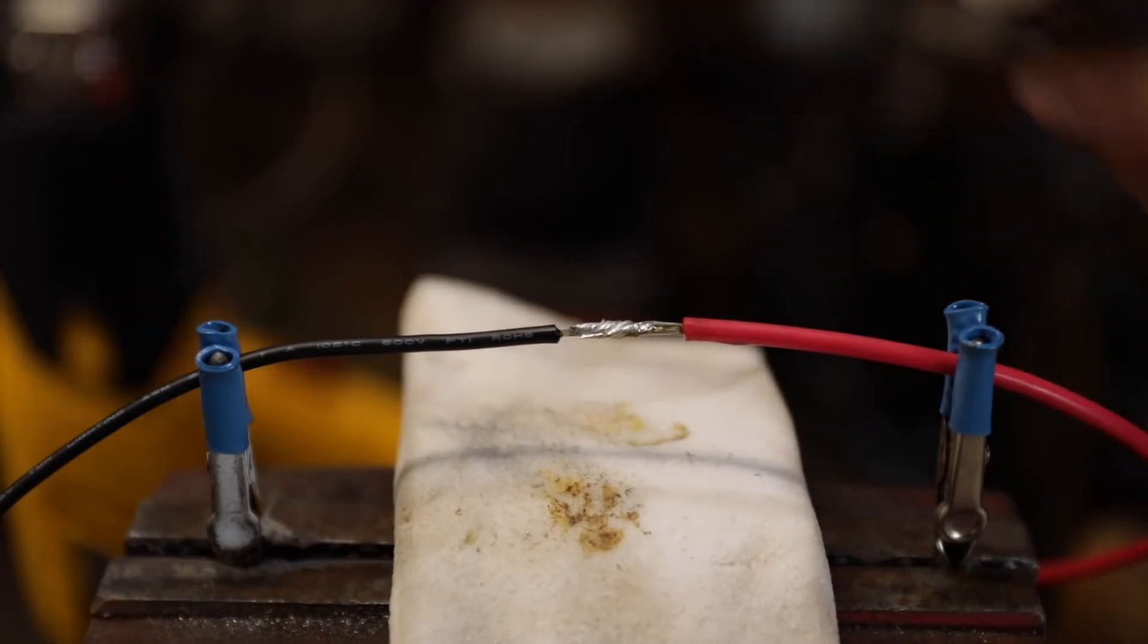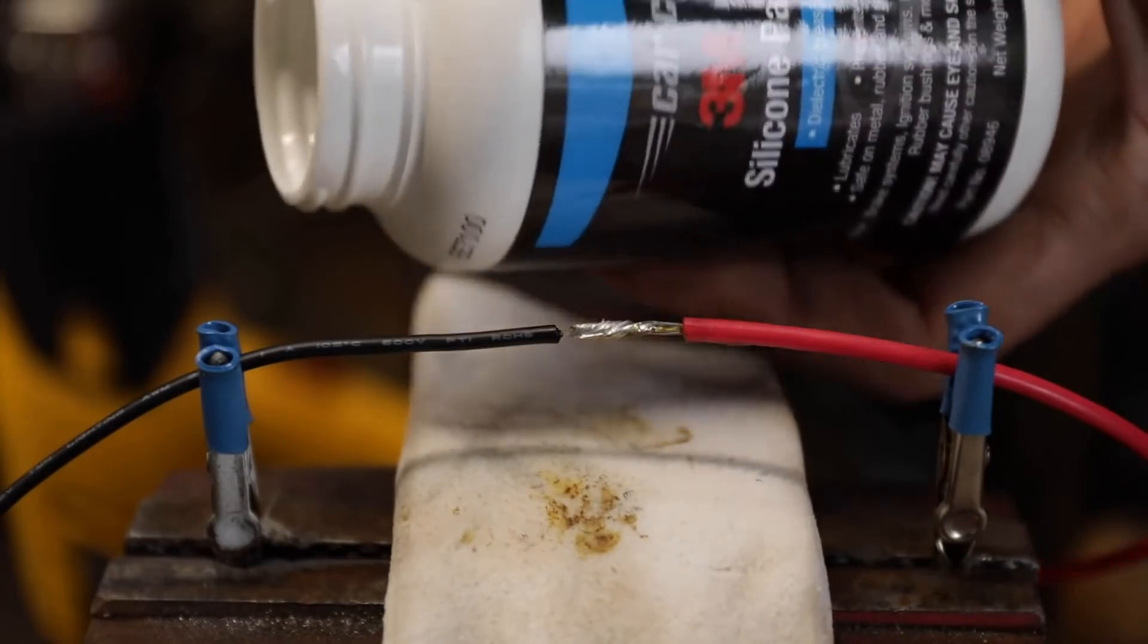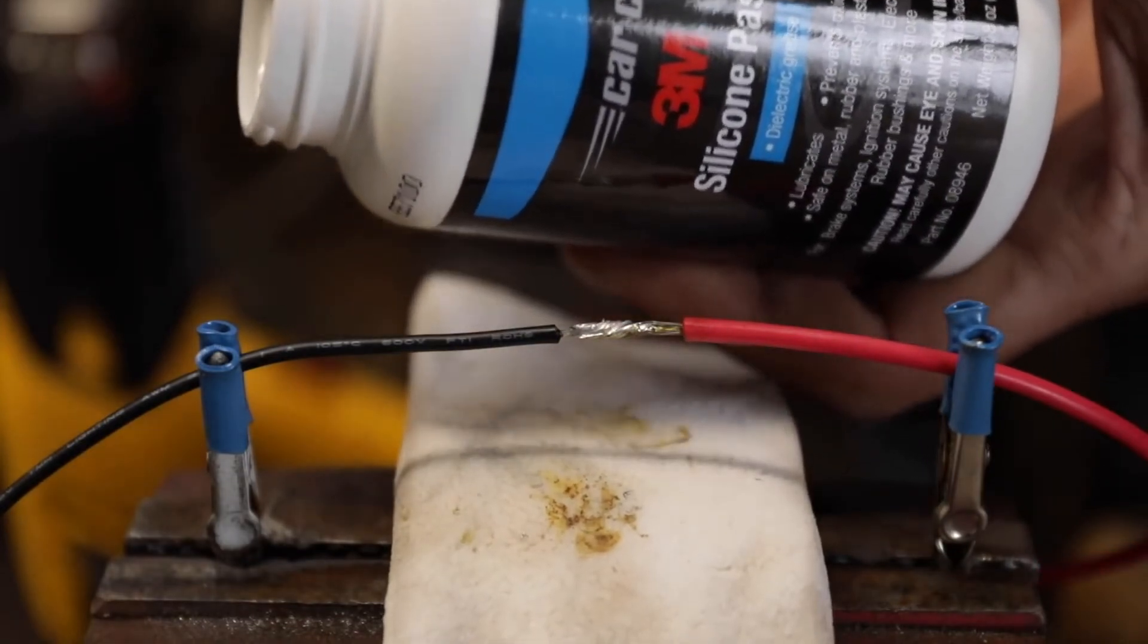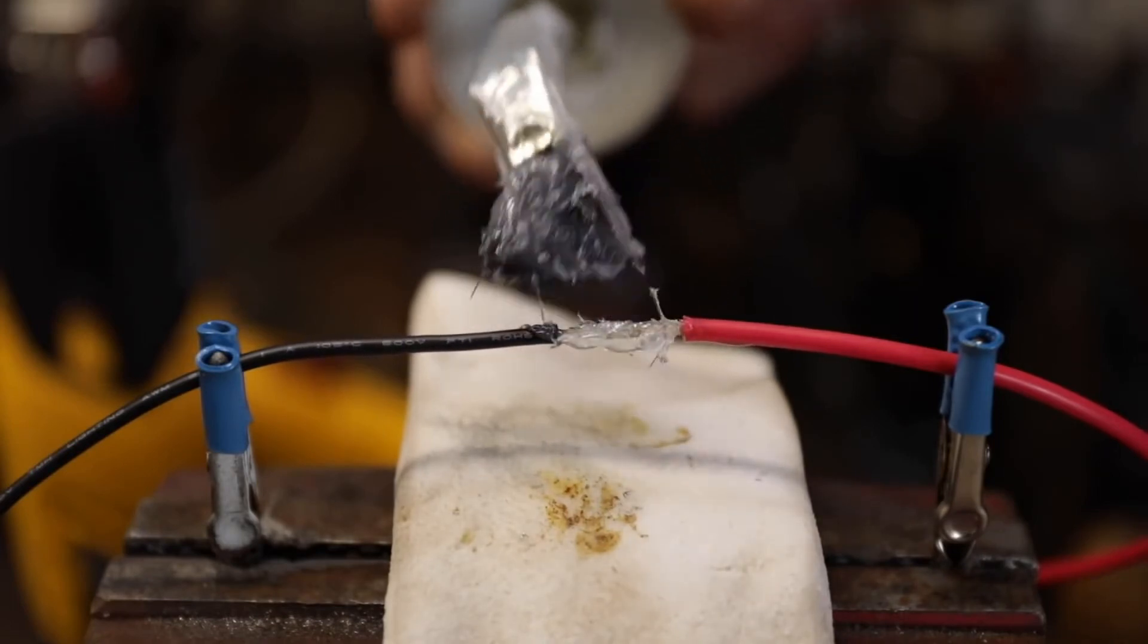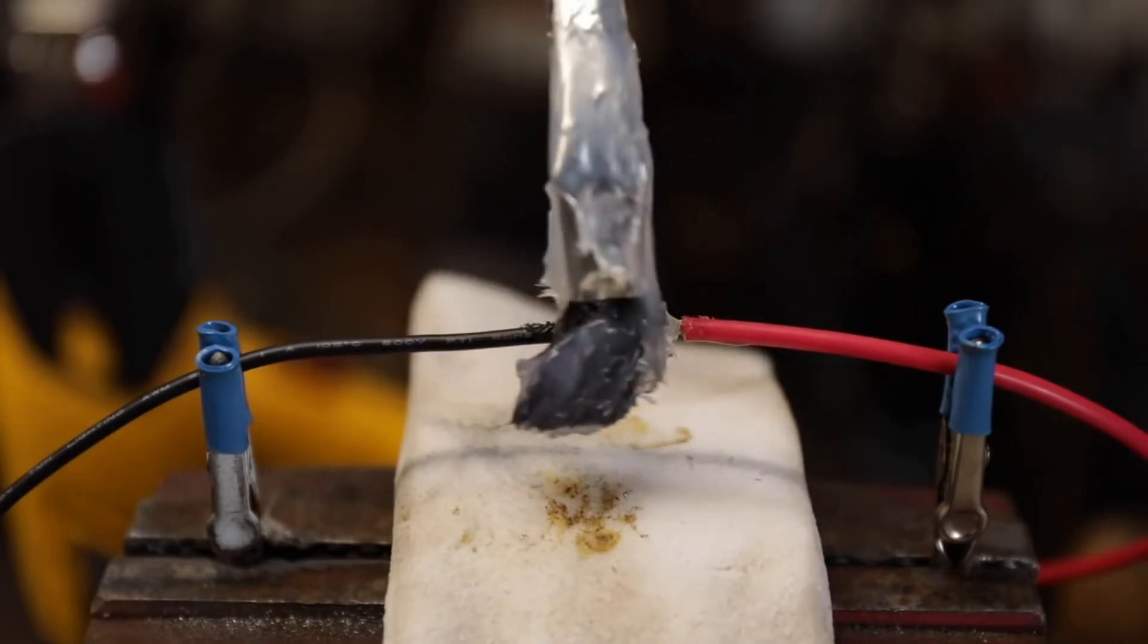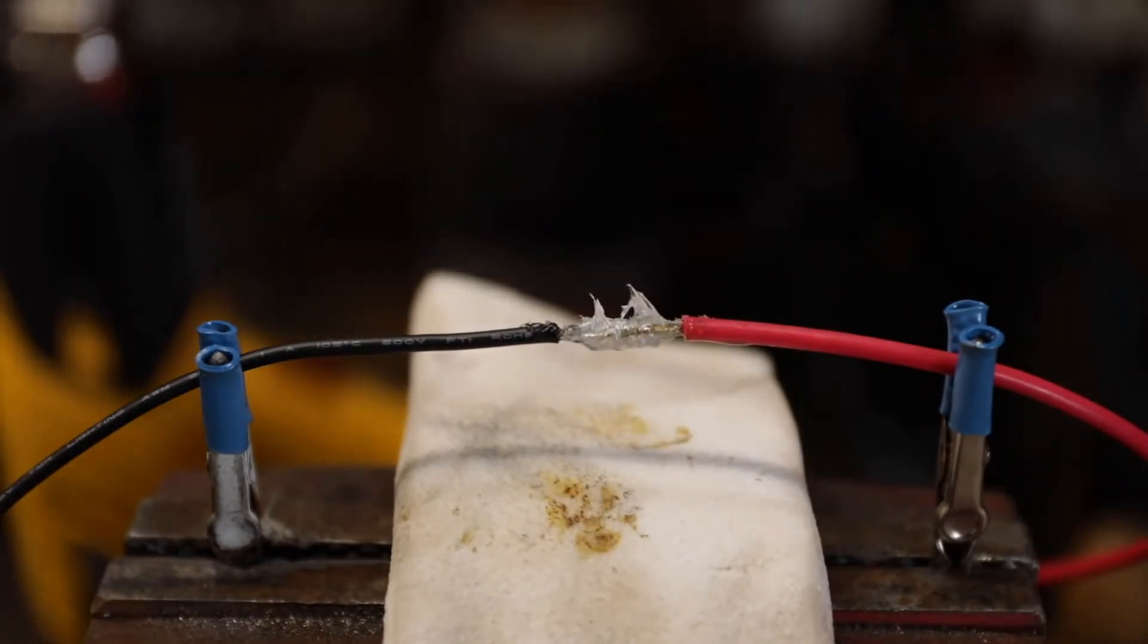Now we want to waterproof this. This is where we're going to use the 3M silicone paste. Having this in your shop anytime you put together electrical connectors or anything like that is so good. We'll just put a little bit of that on there like that.